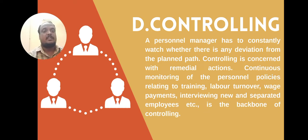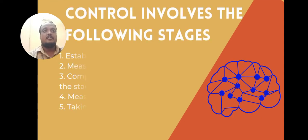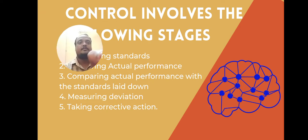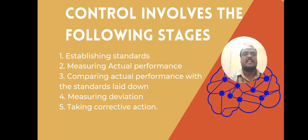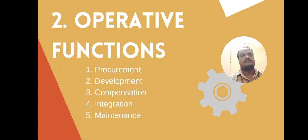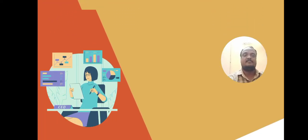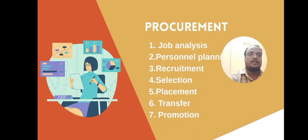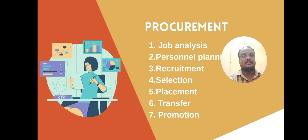Controlling involves the following stages: establishment of standards, measuring actual performance, comparing actual performance, measuring deviation, and taking corrective action. The operative functions include: procurement, development, compensation, integration, and maintenance. Under procurement: job analysis, personal planning, recruitment, selection process, placement, transfer, and promotion.